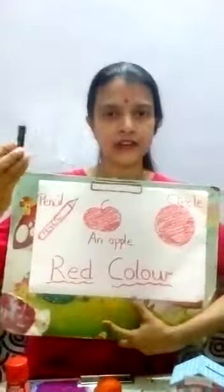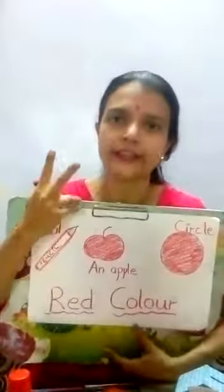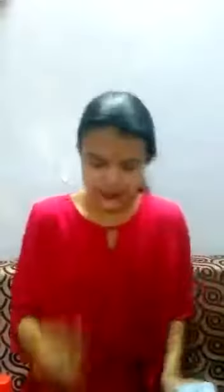You have to take a red color crayon and draw any two objects of red color. Let me show you some objects of red color again. What is this? This is ketchup — red color. This is a house — red color. This is a pencil — red color. This is a tomato — red color.